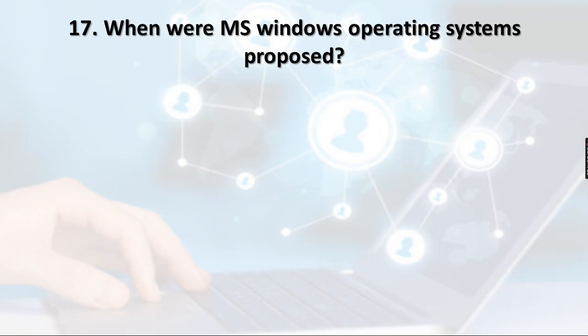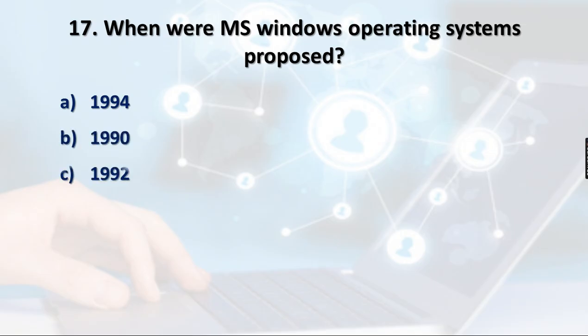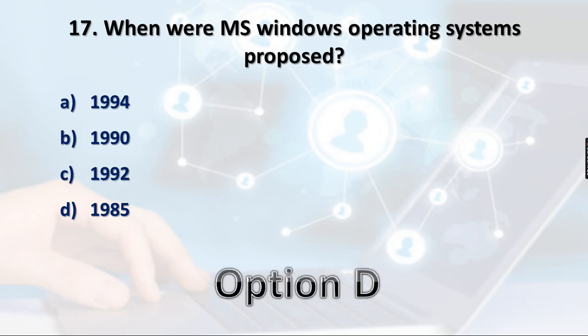Question 17: When was the MS Windows operating system first proposed? Windows has had many versions — 95, 98, 2000, XP, NT, and others. The first time it was proposed was in 1985, so option D is the right answer.